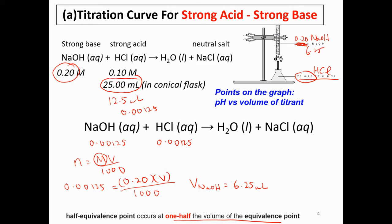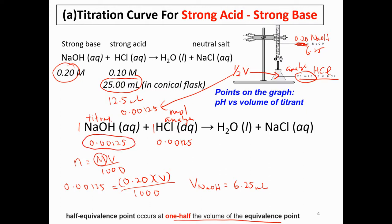Remember: for the half-equivalence point, first find the half-volume — that is, half of the volume of the analyte. Then calculate the moles. After calculating moles, look at the stoichiometry between the analyte and the titrant, find the moles of titrant at the half-equivalence point, and then use n = MV/1000 to find the volume added.